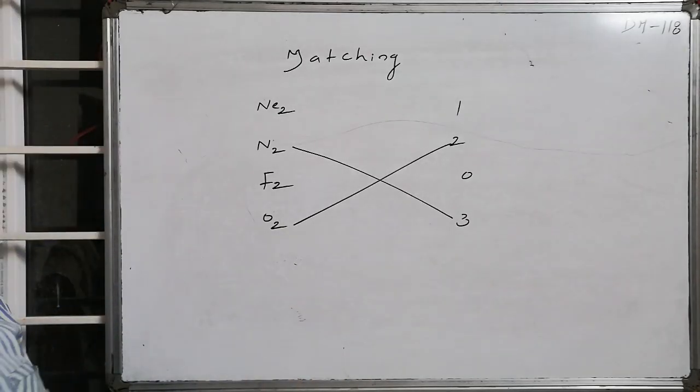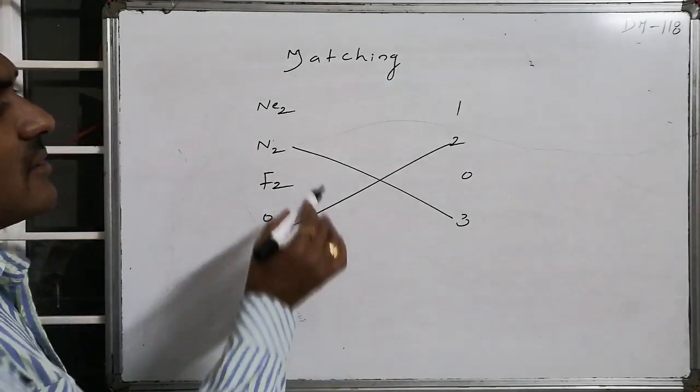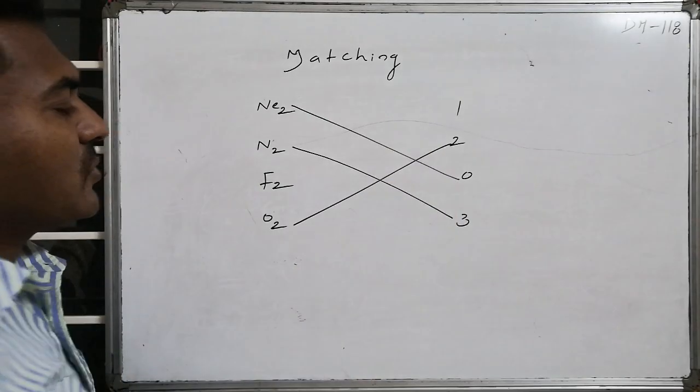Neon is present in the form of an atom. This is an inert gas element, whereas neon in the form of a dimolecule is not possible, hence the bond order is found to be 0.